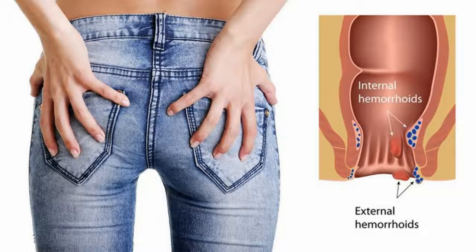As their definitions clearly state, in hemorrhoids the sac contains blood vessels, while in hernias the sac is filled with either organs or part of organs. This is the key difference between hernia and hemorrhoid.